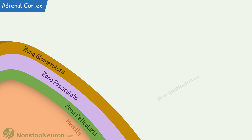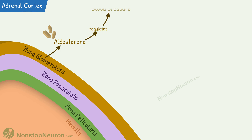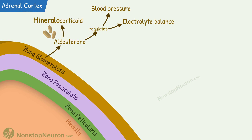All three cortical zones secrete different hormones which regulate various body functions. The glomerulosa layer secretes aldosterone, which regulates blood pressure and electrolyte balance in the body. Aldosterone is considered a mineralocorticoid as it promotes salt and water retention by the kidney.